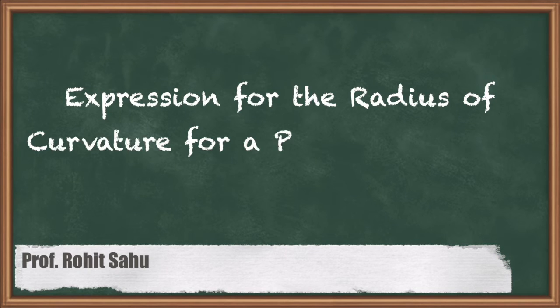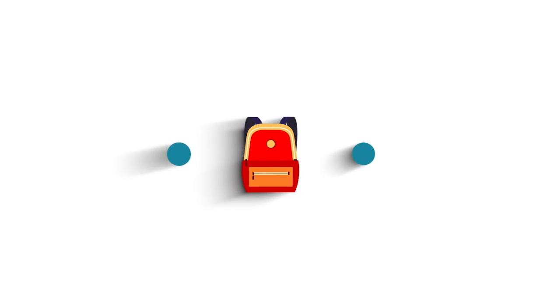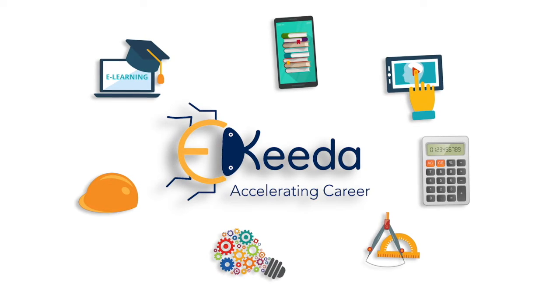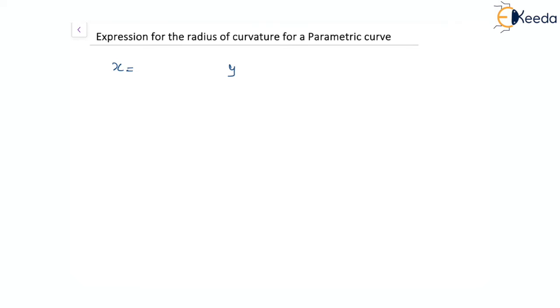Hello. In this session we will discuss the expression for the radius of curvature for a parametric curve. We are in the Cartesian coordinate system, and we consider the case where both x and y are functions of some other variable, let's say t, where t is the parameter.